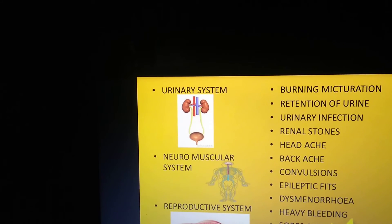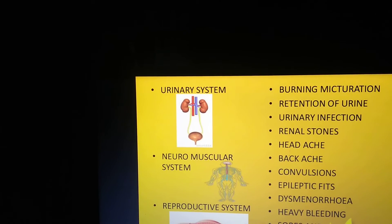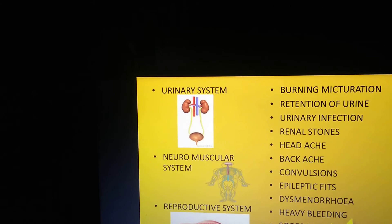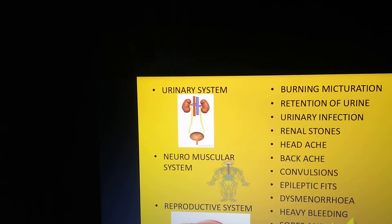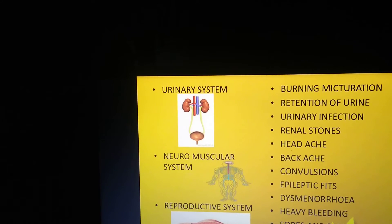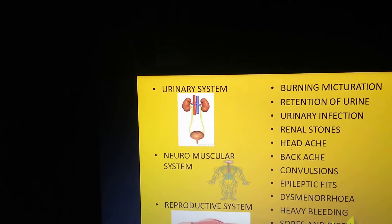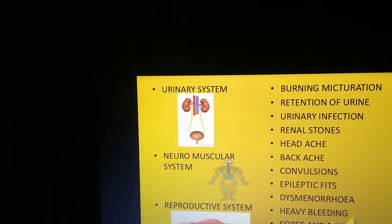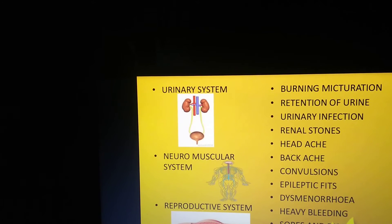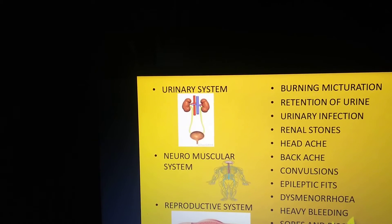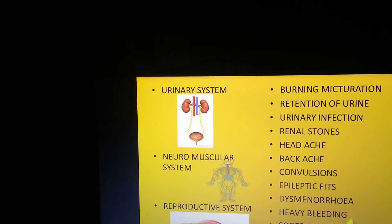In the urinary system, some infection will be there. In the neuromuscular system, convulsions and epilepsy. In the reproductive system, heavy bleeding, painful menstruation, and breast lumps also come under systemic minor ailments.